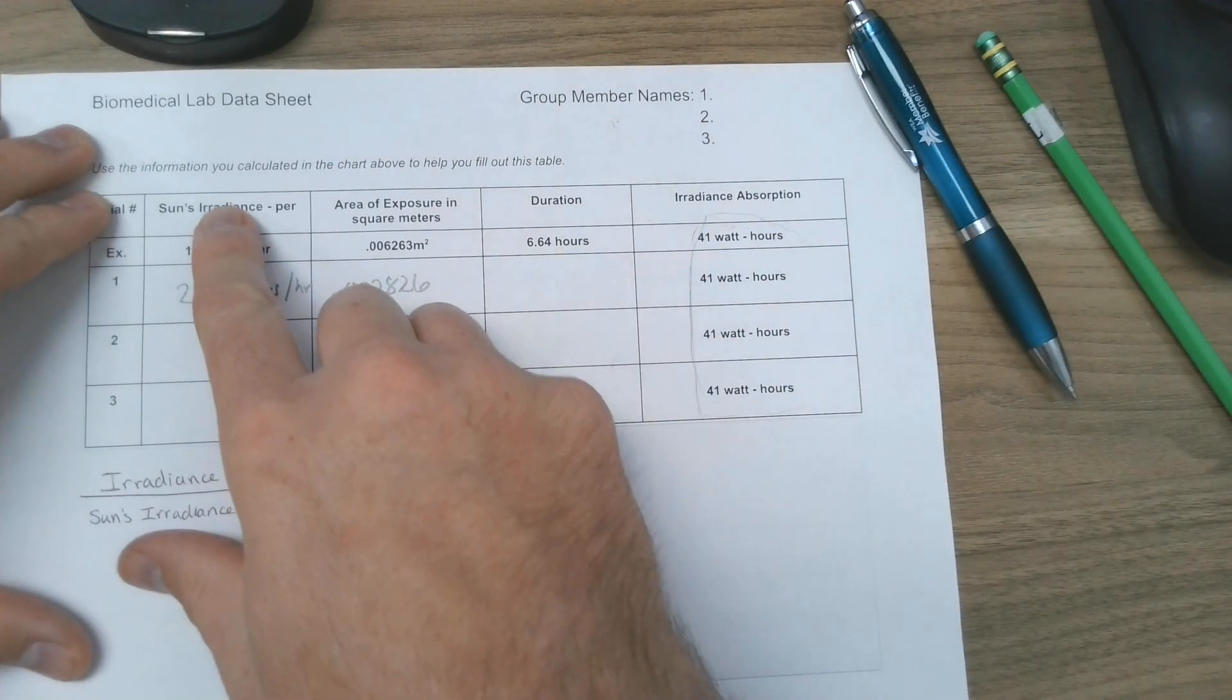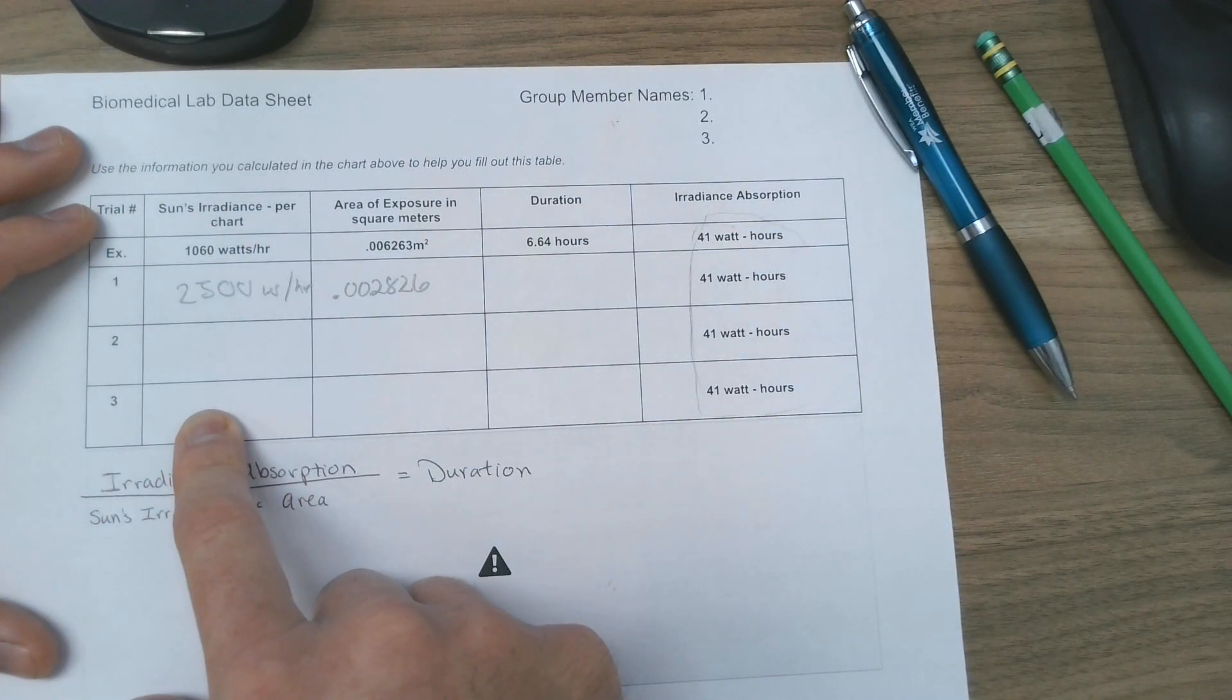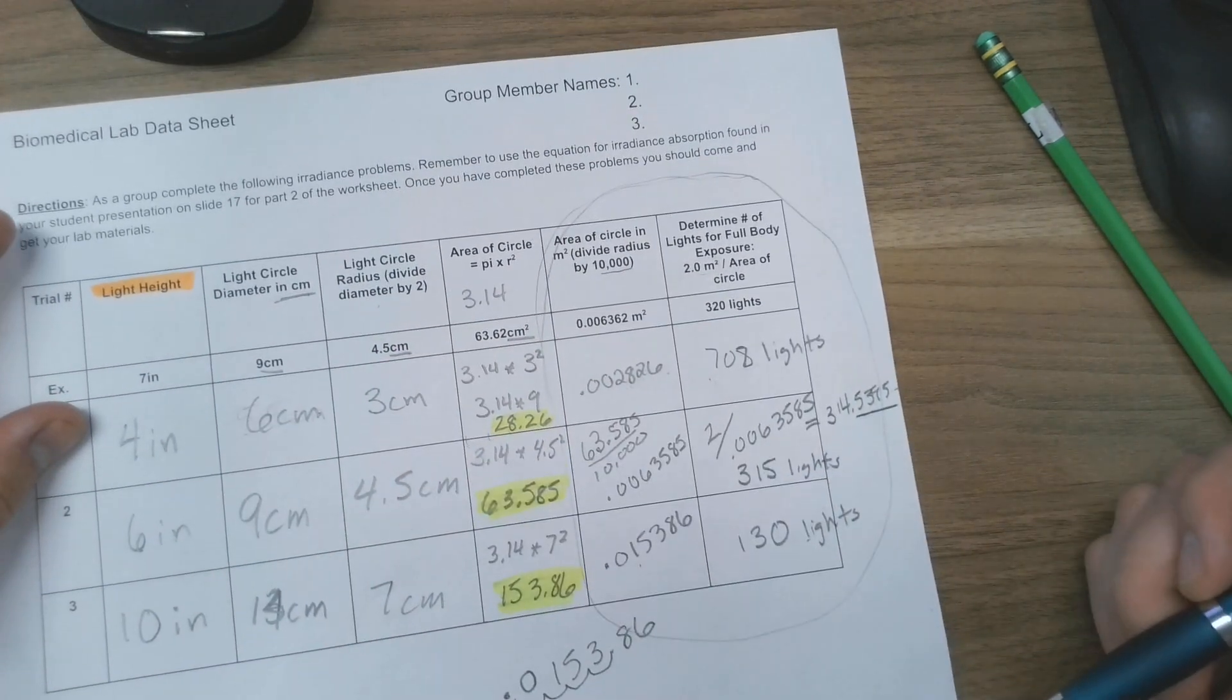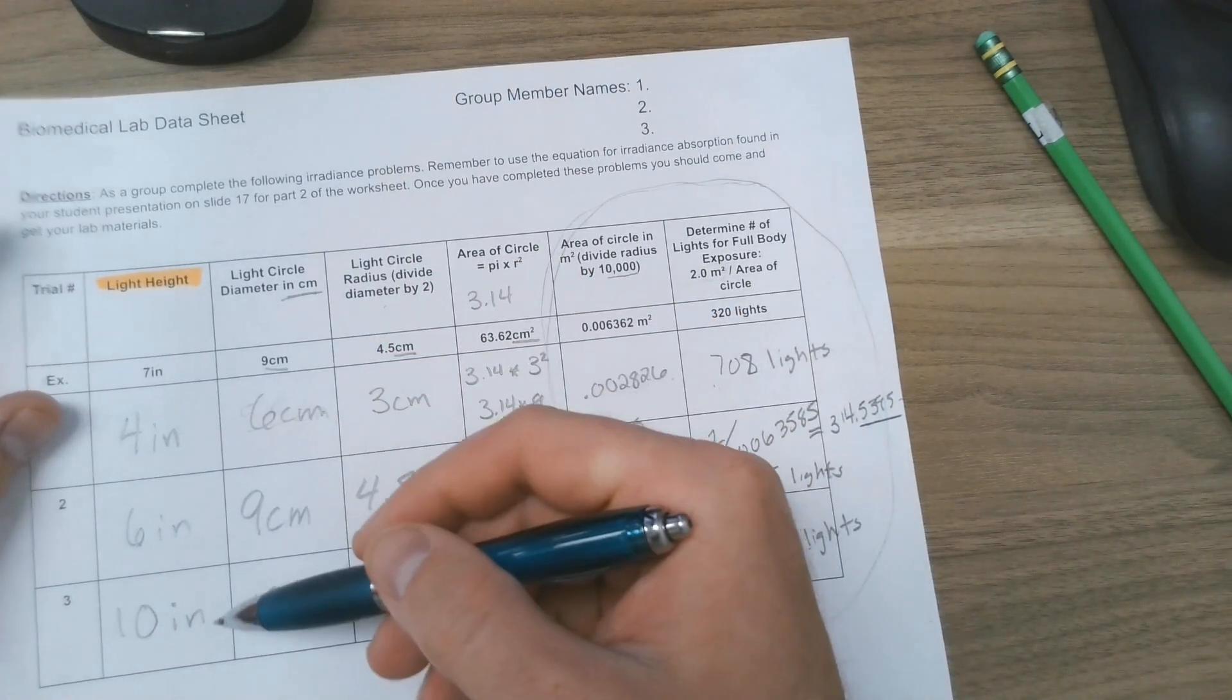So these things should already be filled out, your sun's irradiance. That was the first thing you were supposed to do after you found out the light height or you picked your light heights.